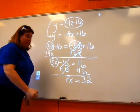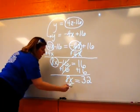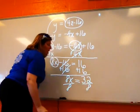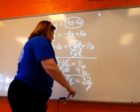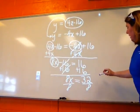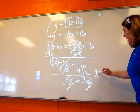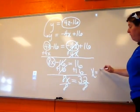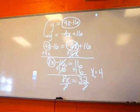And then all I have left to do is divide by 8. So I'm going to divide by 8 on both sides. And when I divide by 8 on both sides, I'm going to get 32 divided by 8, which is X is equal to 4. Okay, because 8 times 4 is 32.